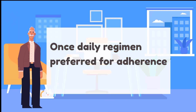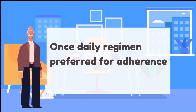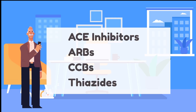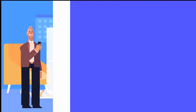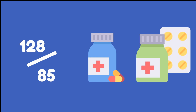Smoking cessation should be encouraged for smokers to help further decrease blood pressure and reduce complications. When it comes to pharmacological treatment, once-daily regimens are preferred for medication adherence. Four drug classes are preferred for initial and/or titration of treatment before selecting from alternative classes: ACE inhibitors, ARBs, CCBs, or thiazide diuretics. Most patients will require two or more drugs, and additional drugs should be selected from these four preferred classes before moving to alternative classes.